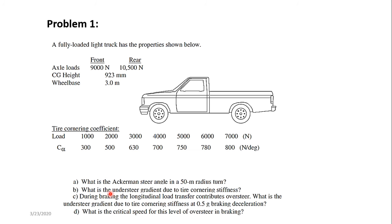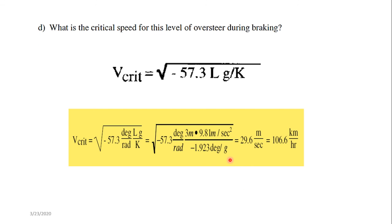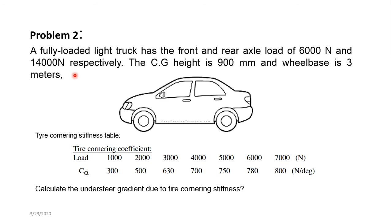This completes all four parts of the question: the Ackermann steering angle, the understeer gradient from tire cornering stiffness, the understeer gradient during 0.5g braking, and the critical speed under that braking condition. The homework problem involves a truck with front axle load 96,000 Newton and rear axle load 14,000 Newton, CG height 900 mm, and wheelbase 3 meters — calculate the understeer gradient due to tire cornering stiffness.